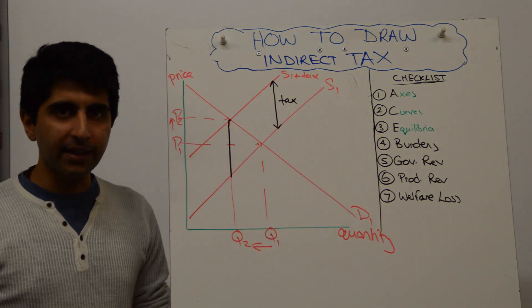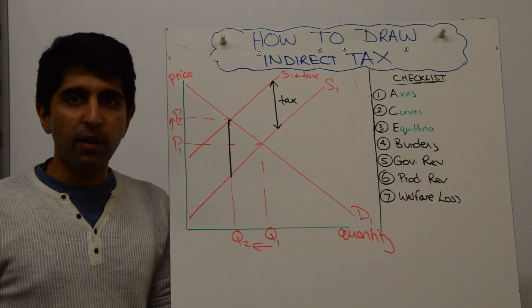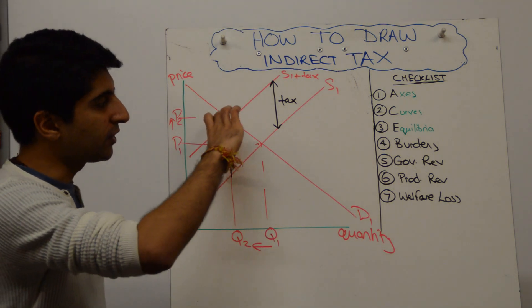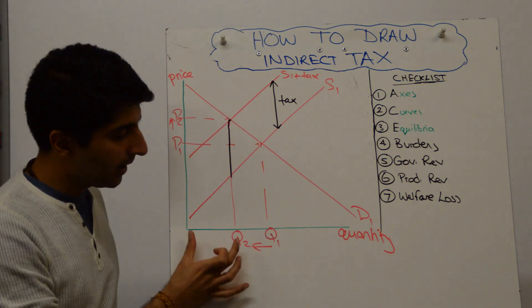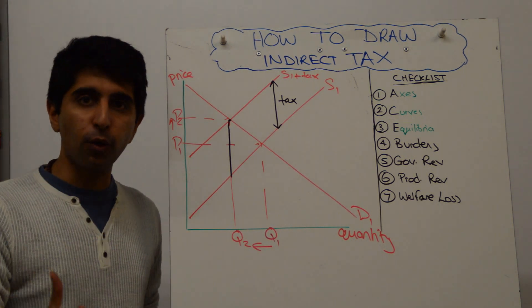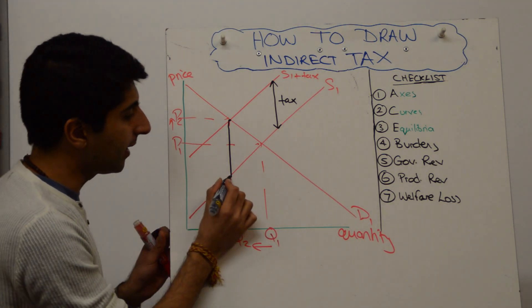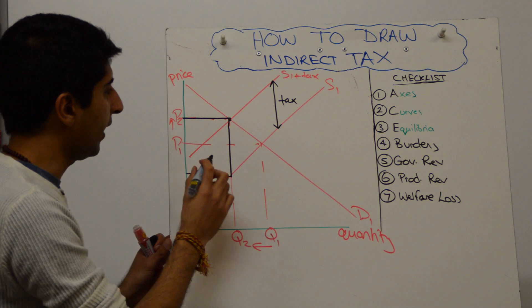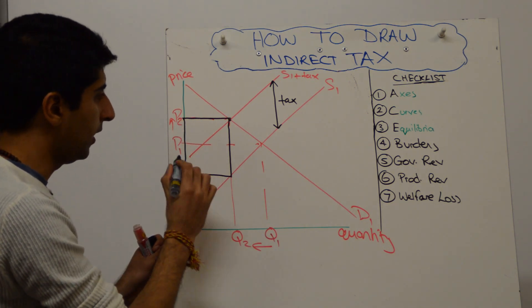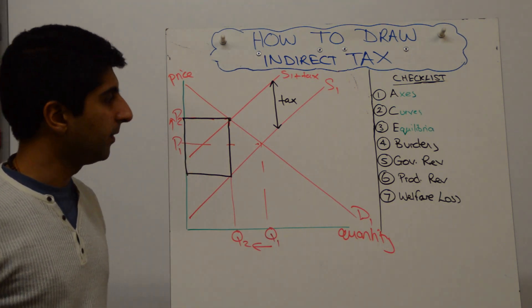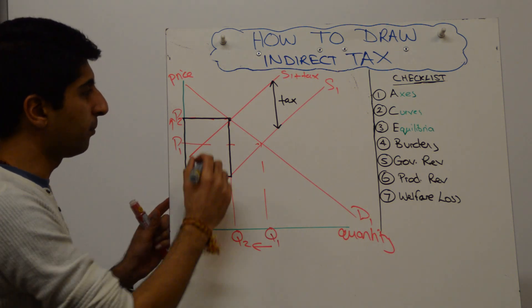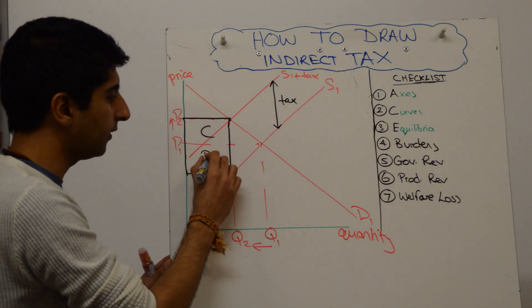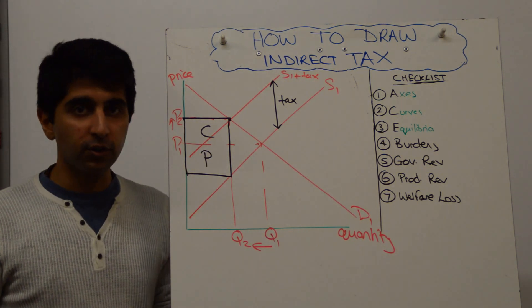So what we do now is we go to the new equilibrium, which is here at P2 and Q2. At that new equilibrium, the value of the tax is the vertical distance between the two supply curves. So this black line here. That black line is the value of the tax. The government generates revenue per unit. So times that vertical distance, which is the tax, by the number of units being produced and sold by the producer. And they end up with this box here. So this black box is the government revenue. The consumer pays the difference in price. So that's C part of the box. The rest is then paid by the producers.